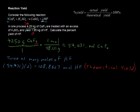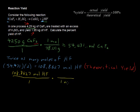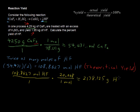We have 108.8627 moles of HF, and we need the molecular mass again. I'm going to put moles in the denominator to cancel out the moles and convert to grams. The molecular mass of HF is 20.008 — that's one hydrogen and one fluorine. So we get approximately 2,178.125 grams. That is our theoretical yield.